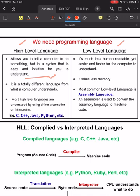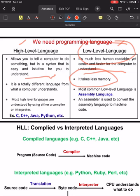Compared to high-level languages, low-level programming language is a slight abstraction of machine code. Low-level language is less human-readable, but it is easier and faster for the computer to understand. It also takes less memory because its complexity is less. The most common low-level language is assembly language.